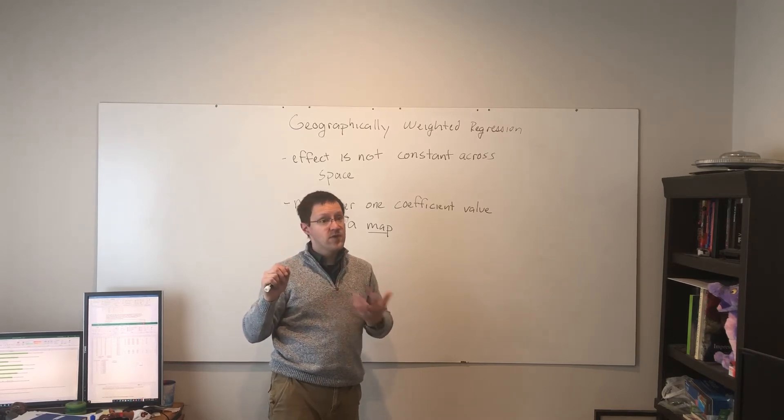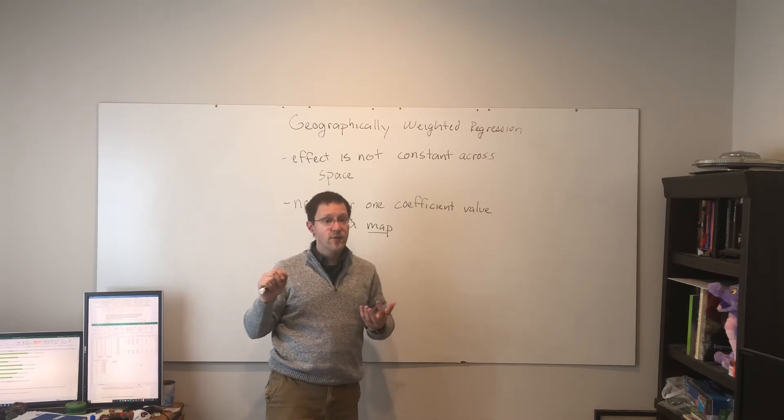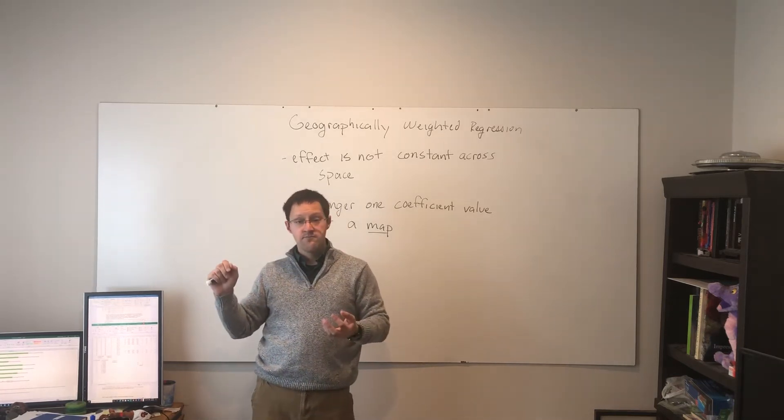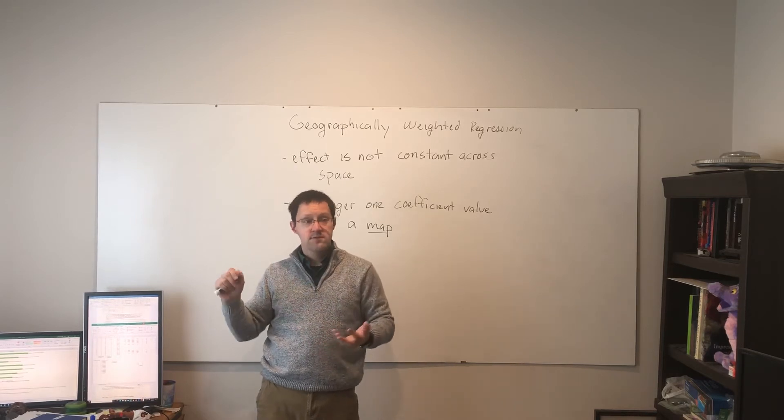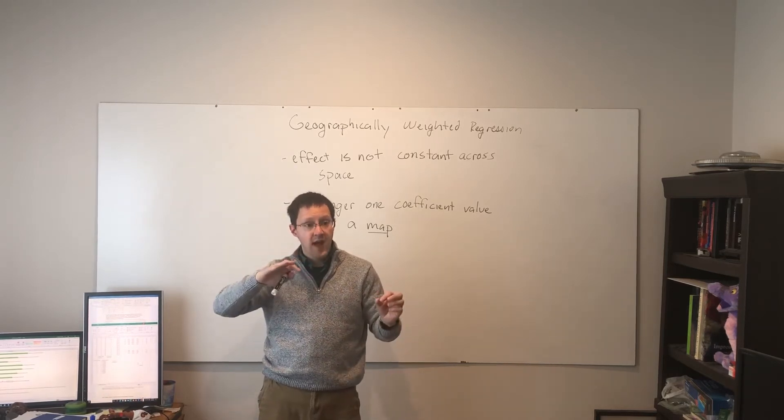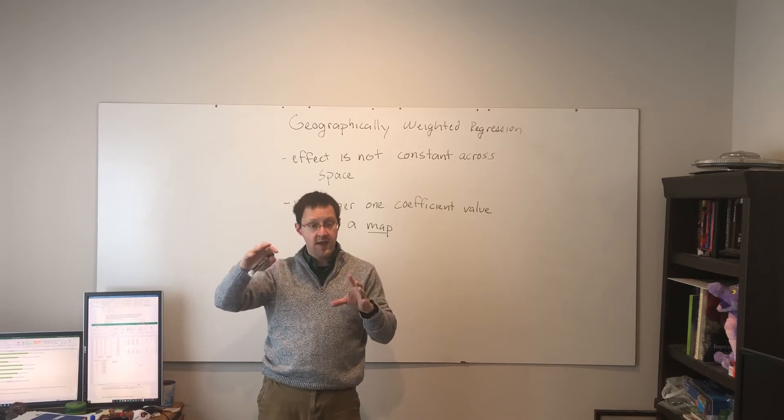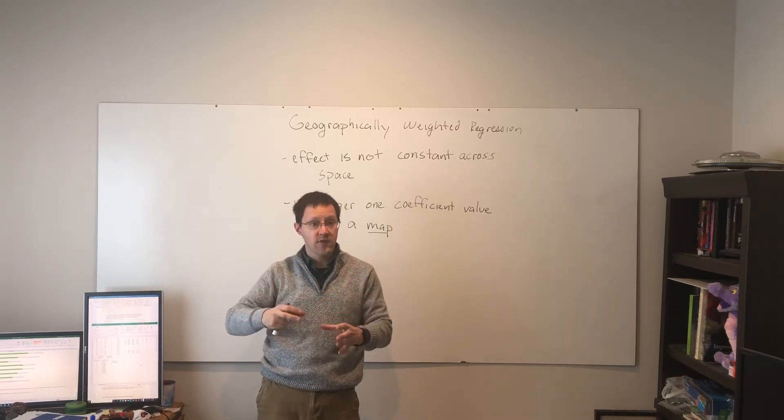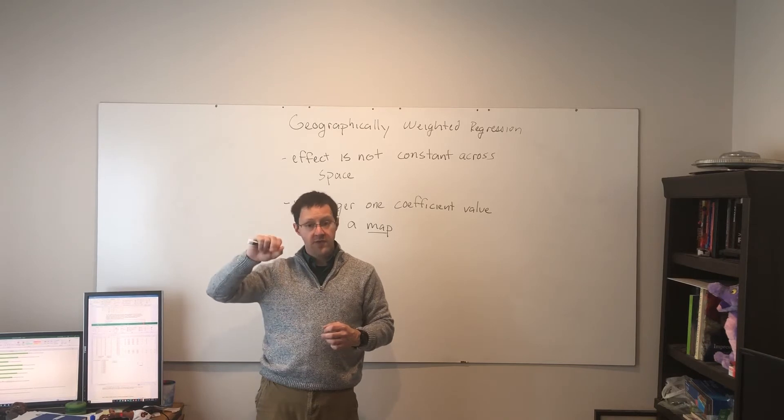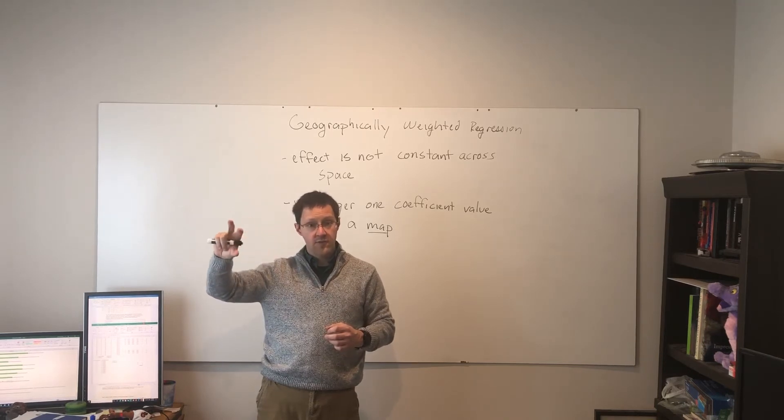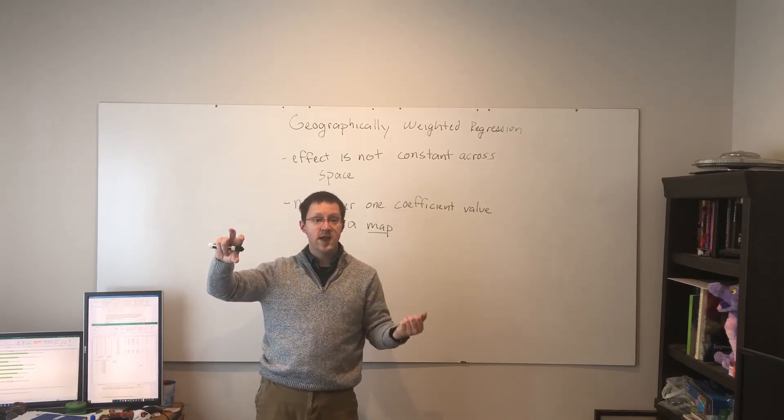Especially in human geography, there could be situations where there are other cultural factors that affect how the independent and dependent variables interact with each other. It could even be in one part of the study area, it's a positive relationship. In another part, it's a negative relationship.